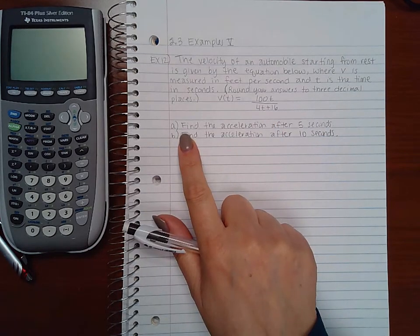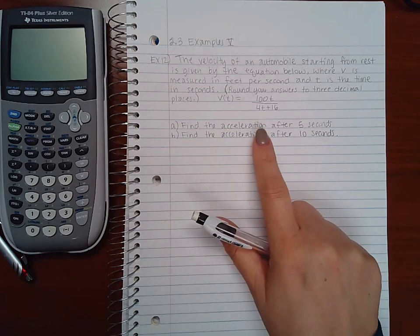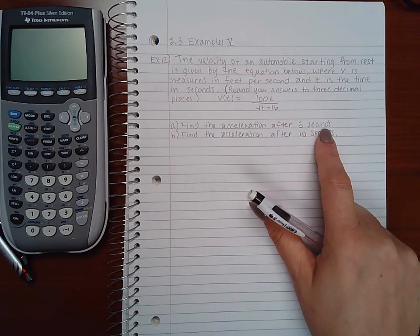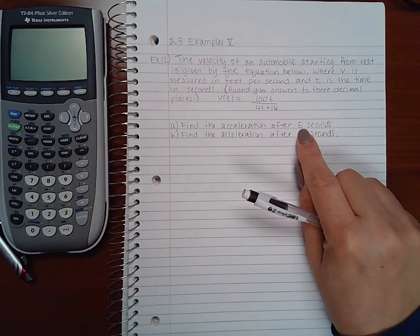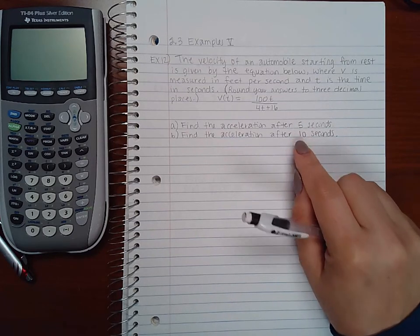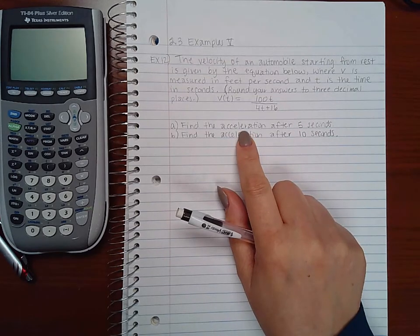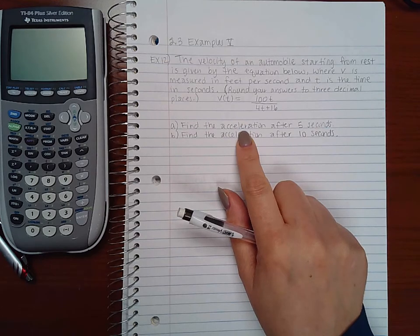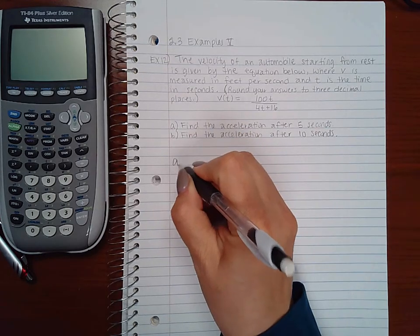Now the first part says, find the acceleration after five seconds. In order for me to find the acceleration at a particular time, I first need to find the general acceleration function, which means I need to find a of t.